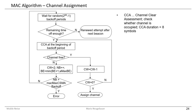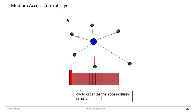Of course we can have the hidden terminal problem — another participant in the network might be here or there, and participants might not see each other regarding their radio communication. If a packet transmission takes place from one node, another node might not see that the first node is sending a message. This is a usual situation in radio communication networks, but we want to overcome this problem with CSMA while taking into account that collisions may still occur.